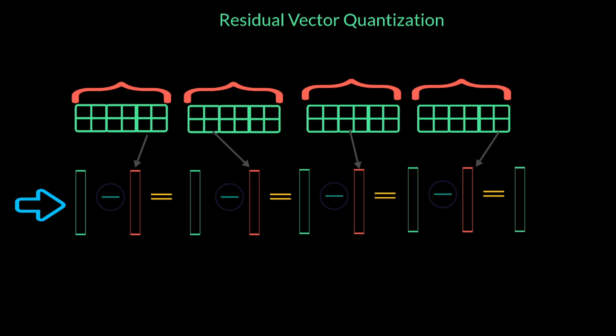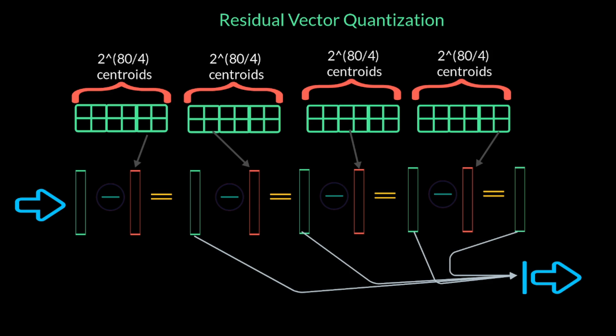One thing to note is that the number of centroids per codebook has reduced from 2 power 80 to 2 power 20. If we choose NQ to be 8, then this number further reduces to 2 power 10, which is just 1024. So, we will get one output for each of the codebooks used. We can either add them up or use as a single output, or we can process them in other ways.